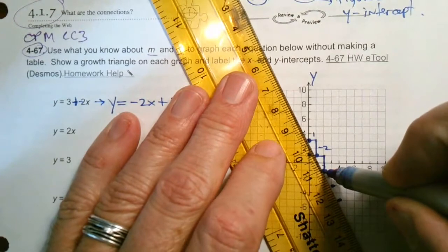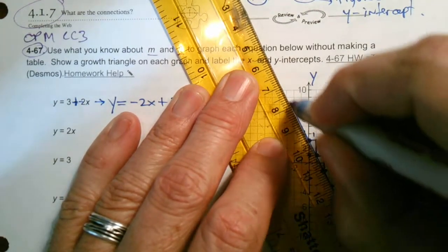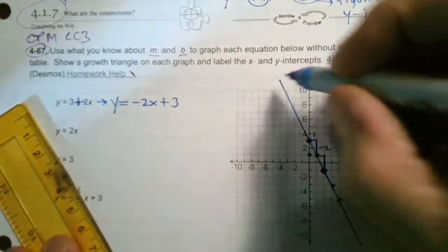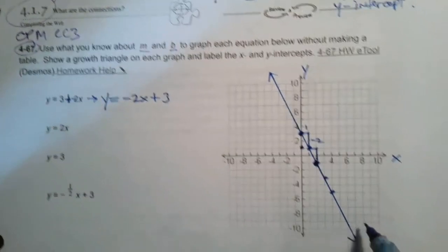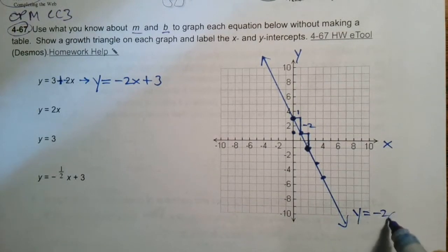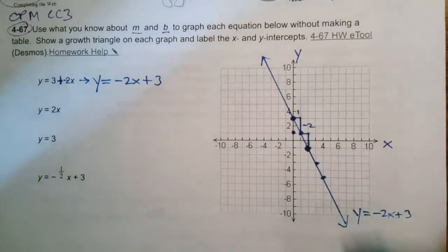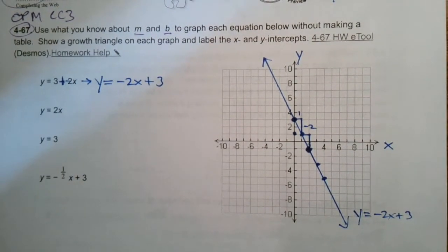So I'm going to now connect my dots, make sure you're using your whole graph, throw arrows on your line, and then I just got to label my line. My label is the equation itself, so y equals negative 2x plus 3 is the name of that line. So that was the first one.